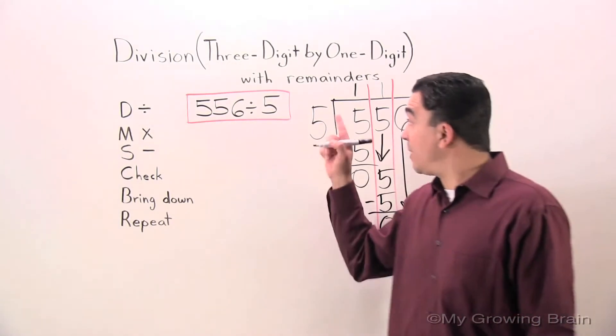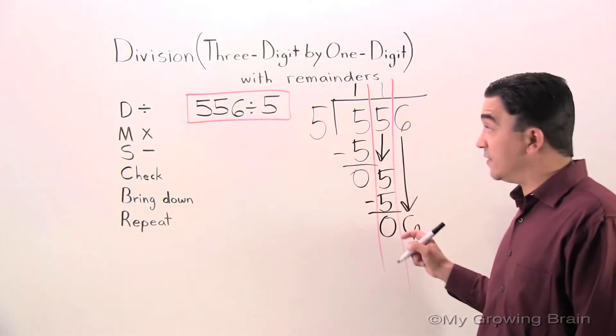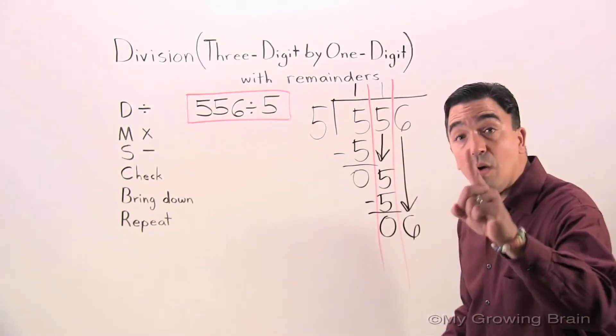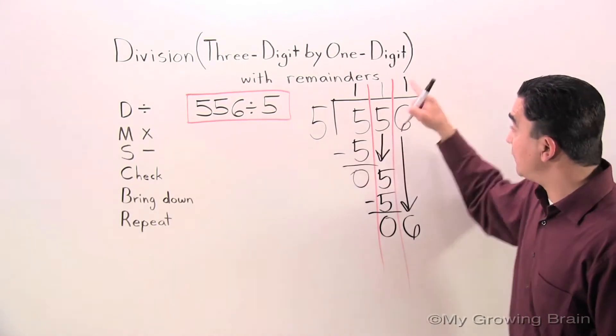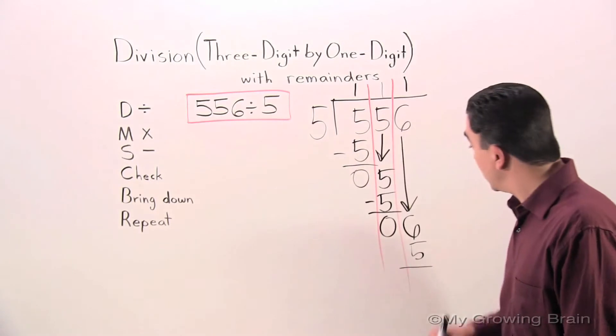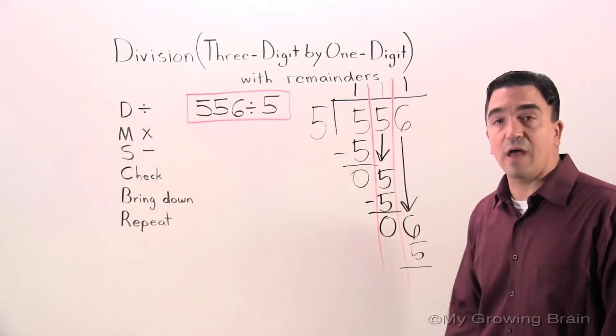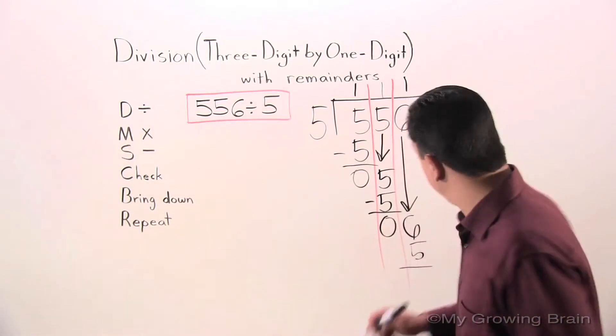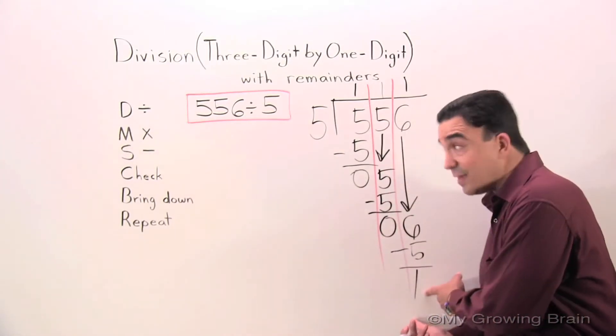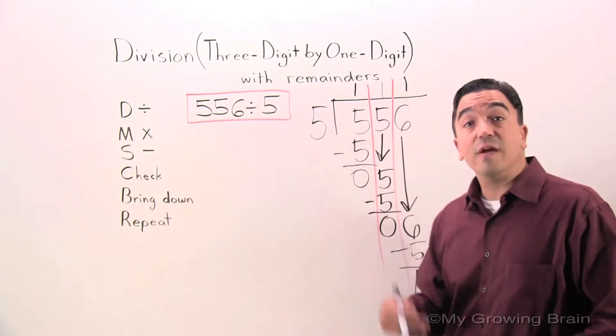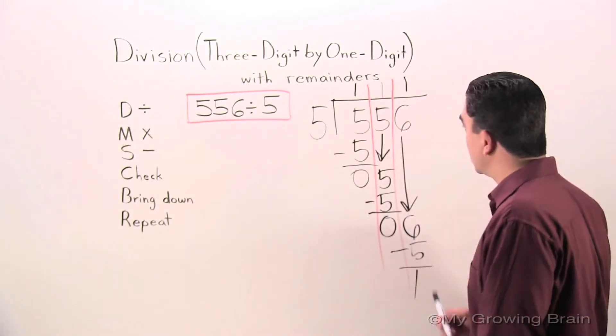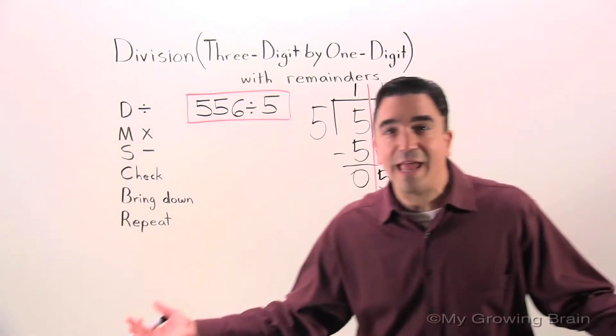Now, six divided by five, or five into six, by dividing would be one. Five times one is five. Subtract. Six minus five is one. Check. That is smaller than that. Therefore, we can keep on going. Bring down. There is nothing there.